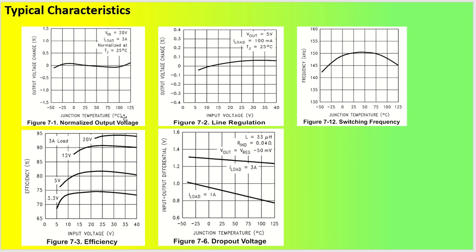Looking at the characteristics curves: output voltage change with junction temperature is below ±0.5%, meaning less than 1% variation with temperature change. In fact it is only about ±0.1%, so the output is very stable with temperature — that's the main reason this IC is widely preferred.